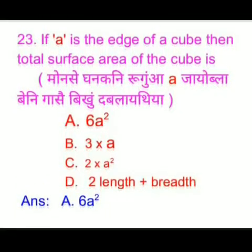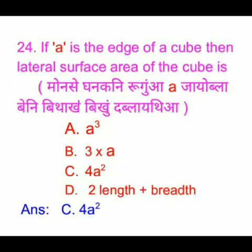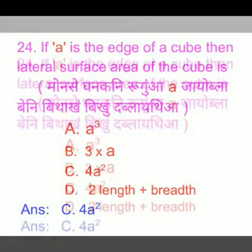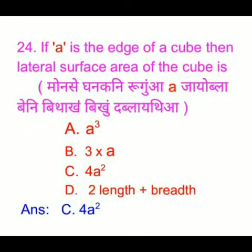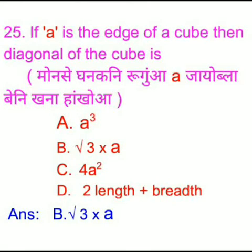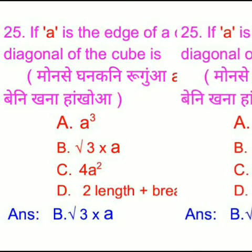the right answer is option A: 6a square. If A is the edge of a cube, then the lateral surface area of the cube — we have four options and the right answer is option C: 4a square. If A is the edge of a cube, then the diagonal of the cube — we have four options and